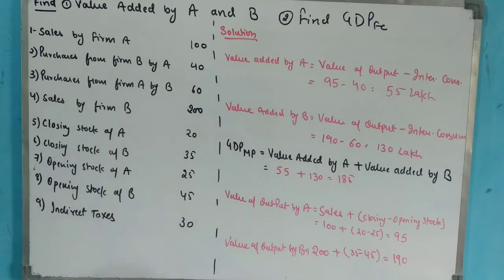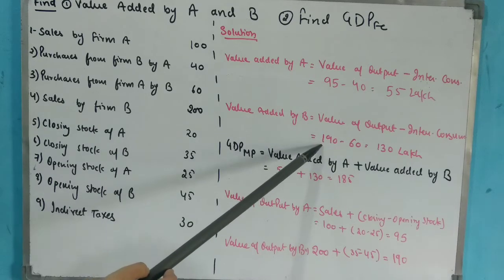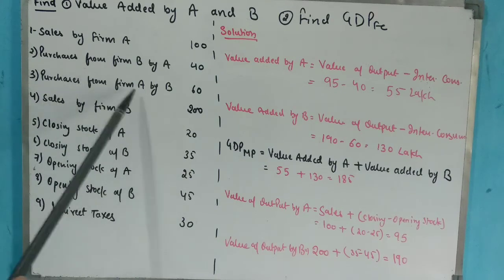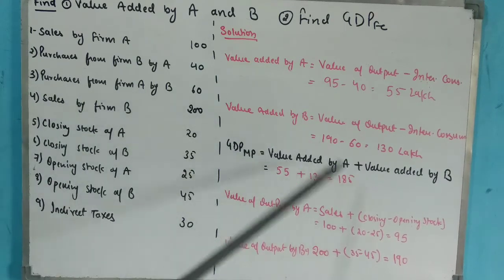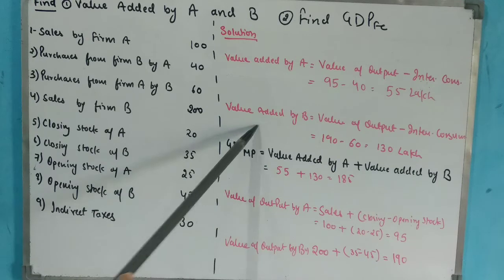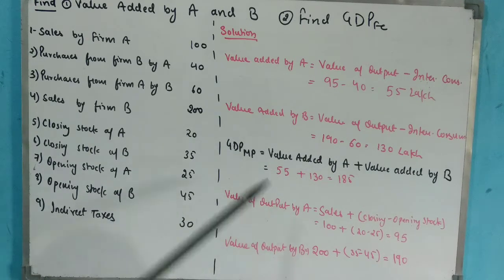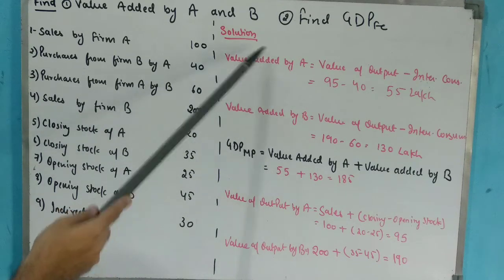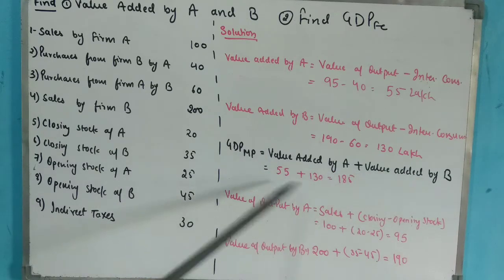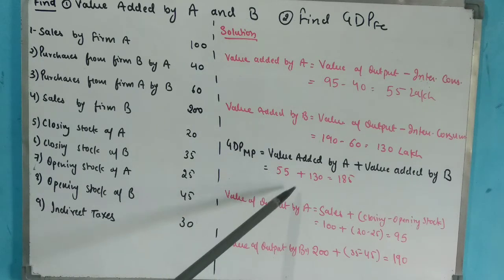So Value Added by A = 95 − 40 = 55 lakh. For B: Value of Output = 190; Intermediate Consumption = Purchases from A by B = 60. So Value Added by B = 190 − 60 = 130 lakh. To find Total GDP at MP, we add both: 55 + 130 = 185 lakh.